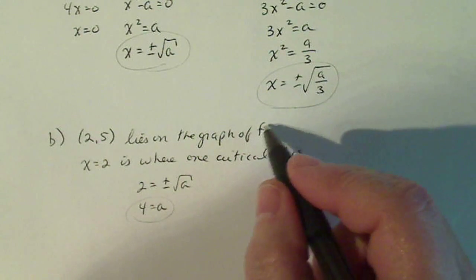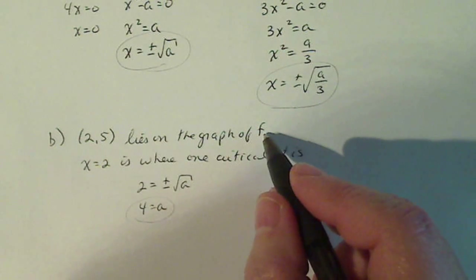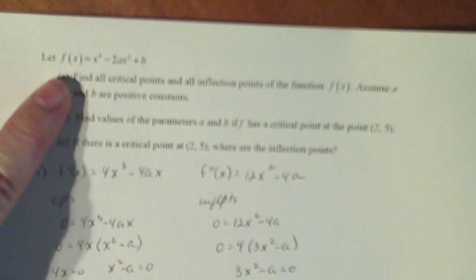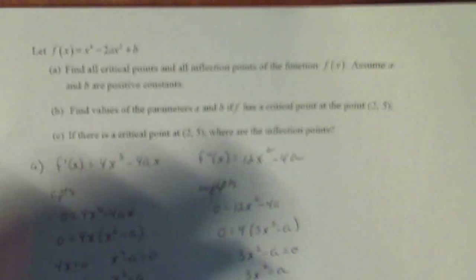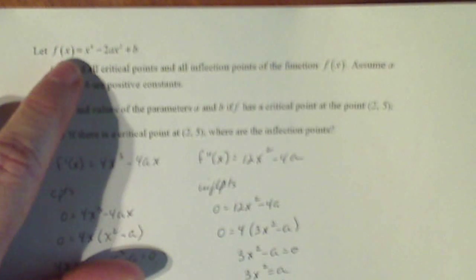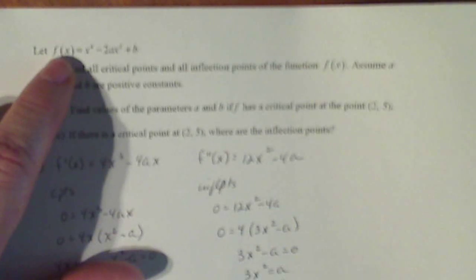To find b, I use part 1 up here. That the fact that (2, 5) lies on the graph of f. So here's our equation for f right here. So I'm going to plug in 2 for x and 5 for f(x).